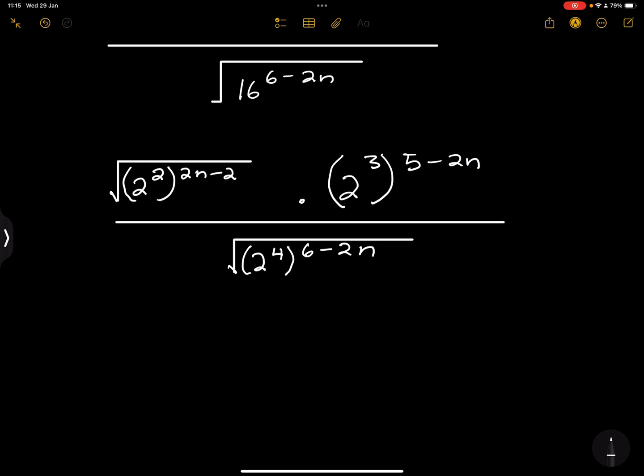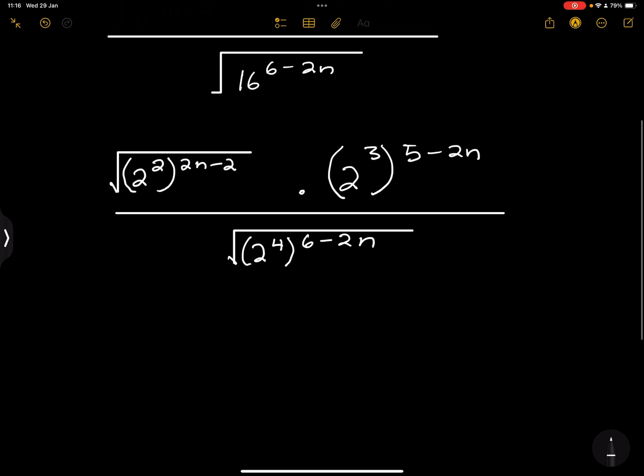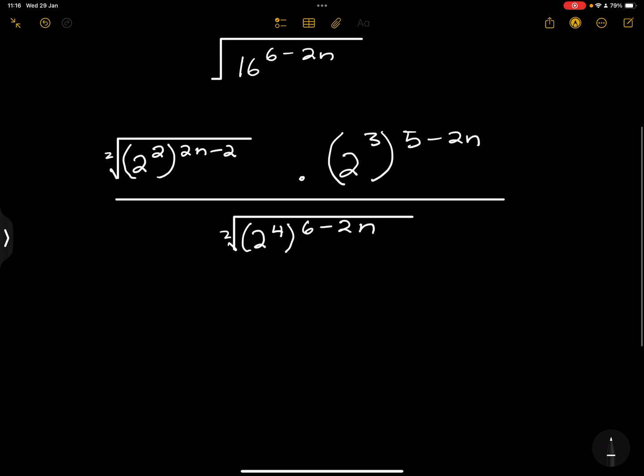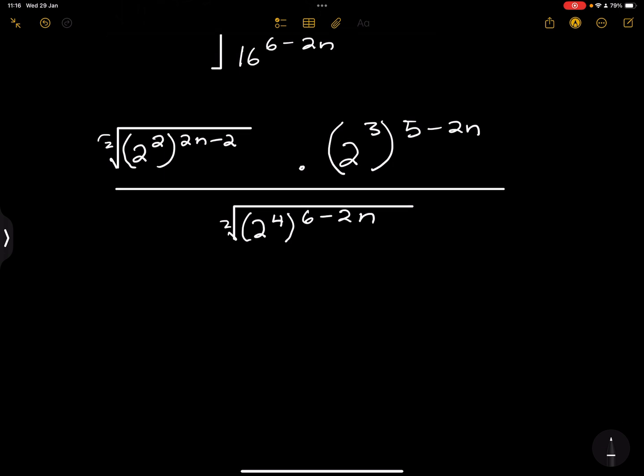Now remember, whenever you've got a root, if our root in this case has no number in front of it, we assume that that is a square root, which means automatically the number there becomes 2. Please remember that, ladies and gents.